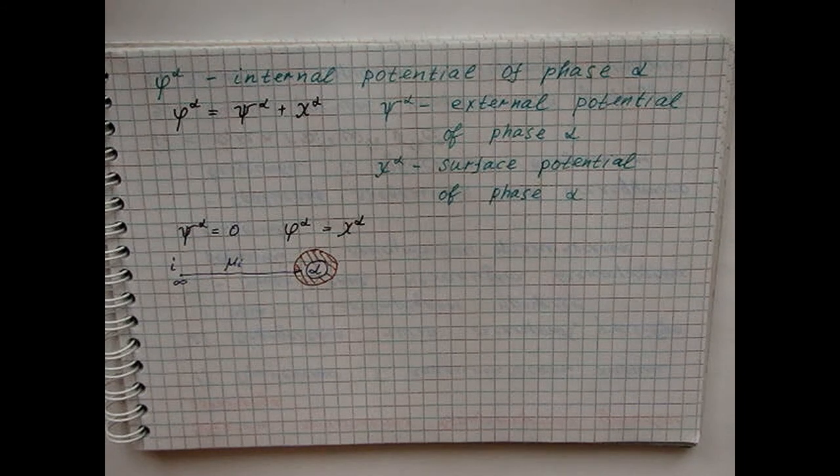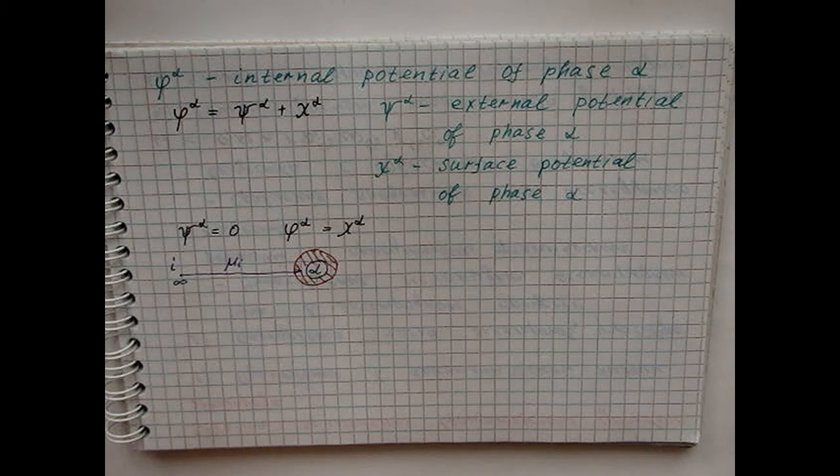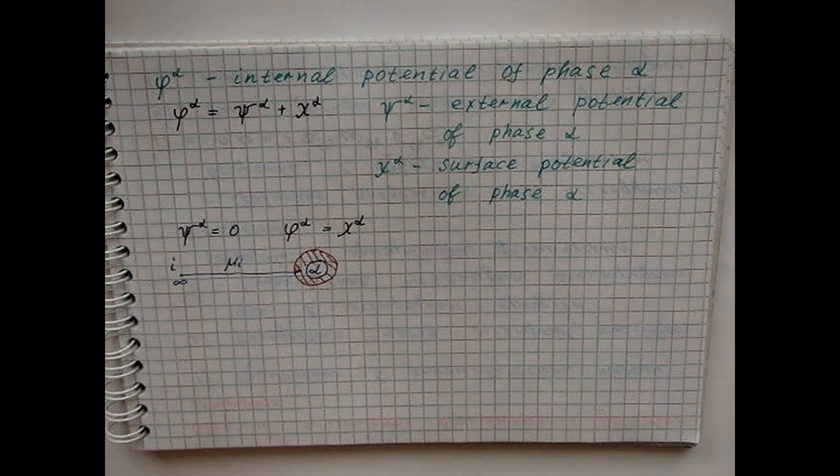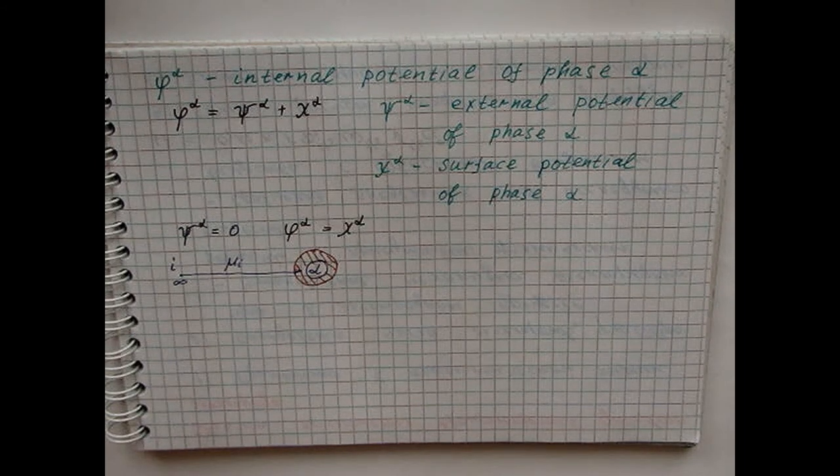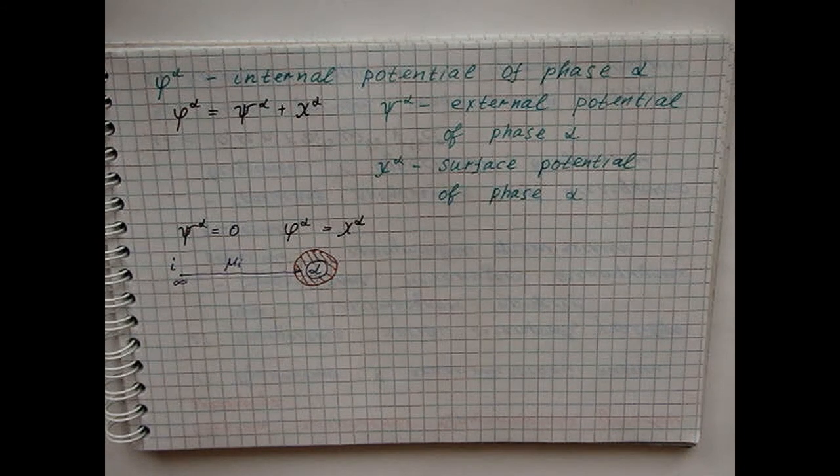The experimental definition is available for the work of transferring only a real particle, for example, an electron or an ion. Therefore, in any experiments, either the electrochemical potential or the difference in electrochemical potentials related to the alpha and beta phases is measured.